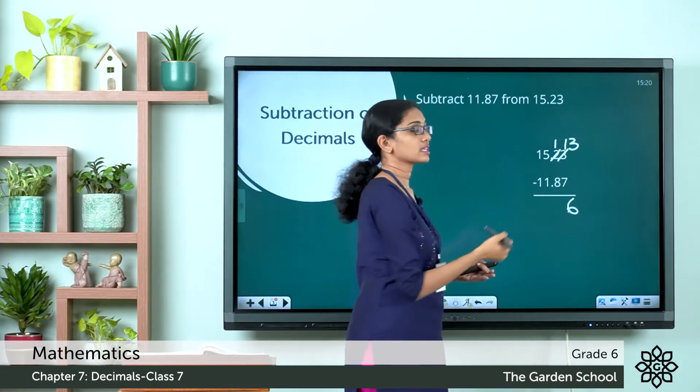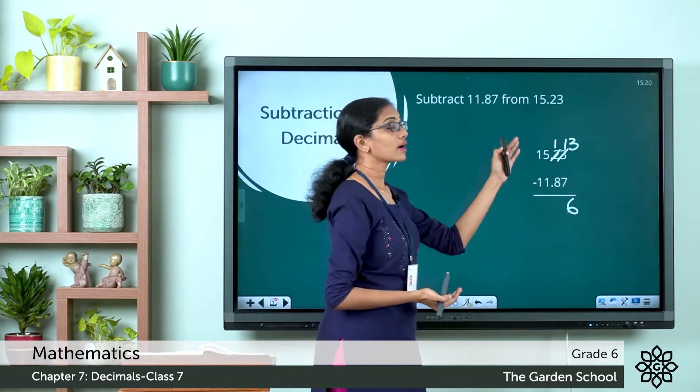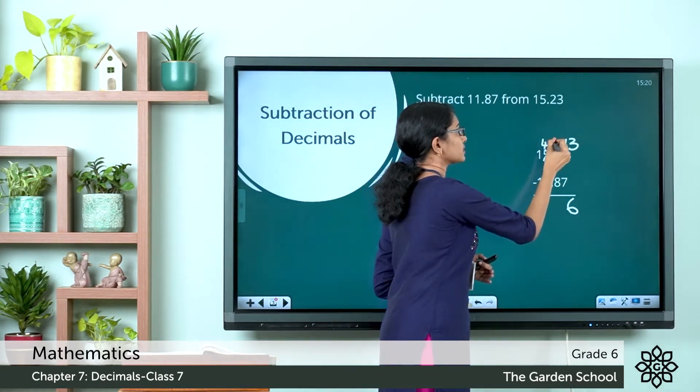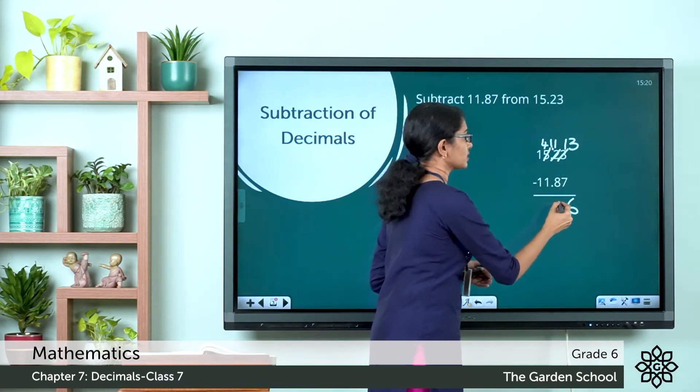Now we have 1 minus 8 which we cannot do. So we are going to borrow from the ones place. Now borrowing 1 from here, this becomes 4, this becomes 11. So 11 minus 8 is equal to 3.